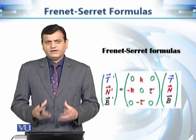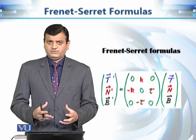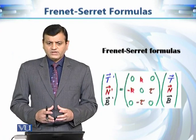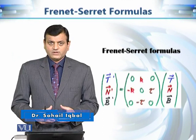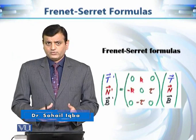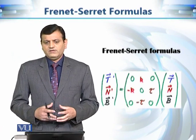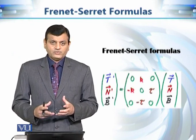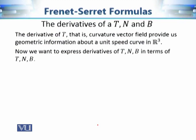Continuing our discussion of the geometry of curves in R3, we now want to see one of the most important tools: the Frenet-Serret formulas, named after two mathematicians Frenet and Serret. These formulas provide us the derivatives of three mutually orthogonal unit vector fields known as the tangent vector field, principal normal vector field, and binormal vector field — also known as the Frenet-Serret frame or TNB frame.